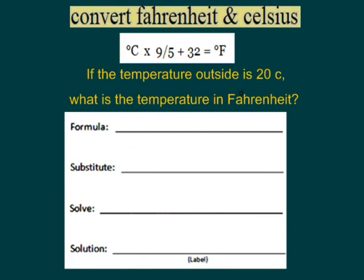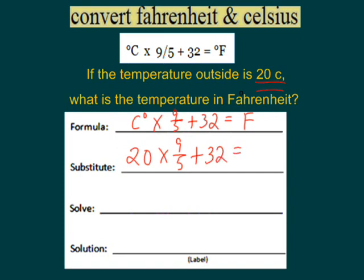One last formula — this converts Celsius into Fahrenheit. If the temperature is 20 degrees Celsius, what is it in Fahrenheit? The formula is: Celsius times 9 over 5, plus 32, equals Fahrenheit. We know Celsius is 20, so we multiply 20 times 9 over 5, then add 32.